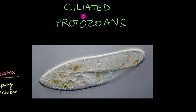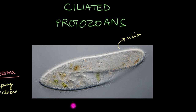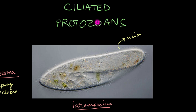Next up, we have the ciliates or ciliated protozoans — protozoans identified by the presence of numerous tiny hair-like structures called cilia, which help in not just moving around but also in gathering food. Most ciliated protozoans are free-living and aquatic, like paramecium. The most unique thing about ciliated protozoans is that they are considered to be the highest evolved ones among all protozoans, because they have a bunch of sophisticated features that the other protozoans don't have. For example, all ciliates take in their food through a mouth-like aperture called the cytostome or the oral groove.